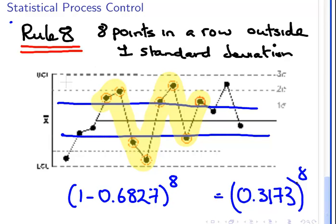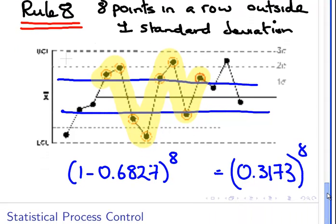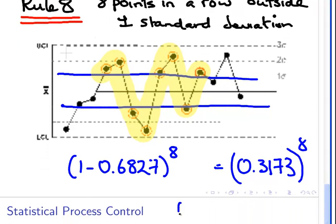And, working that out, what we would get is 0.00010. It's an extremely small number. So, that's four of the rules.